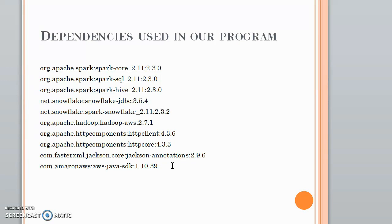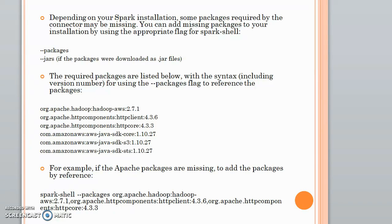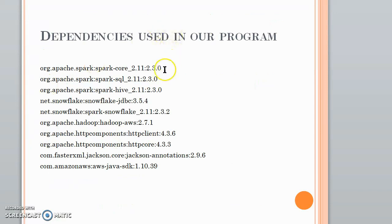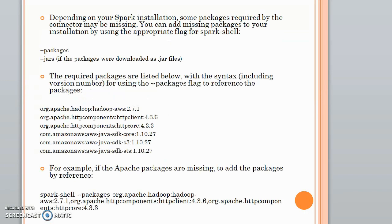For example, I have used Spark 2.3. If you are using 2.2 or some other version, the dependency versions may change, and you may face issues. Depending on your Spark installation, some packages required by the connector may be missing. You can add missing packages to your install chain using the appropriate flag — for example, using `--jars` to include jar files, or `--packages` in the Spark shell.